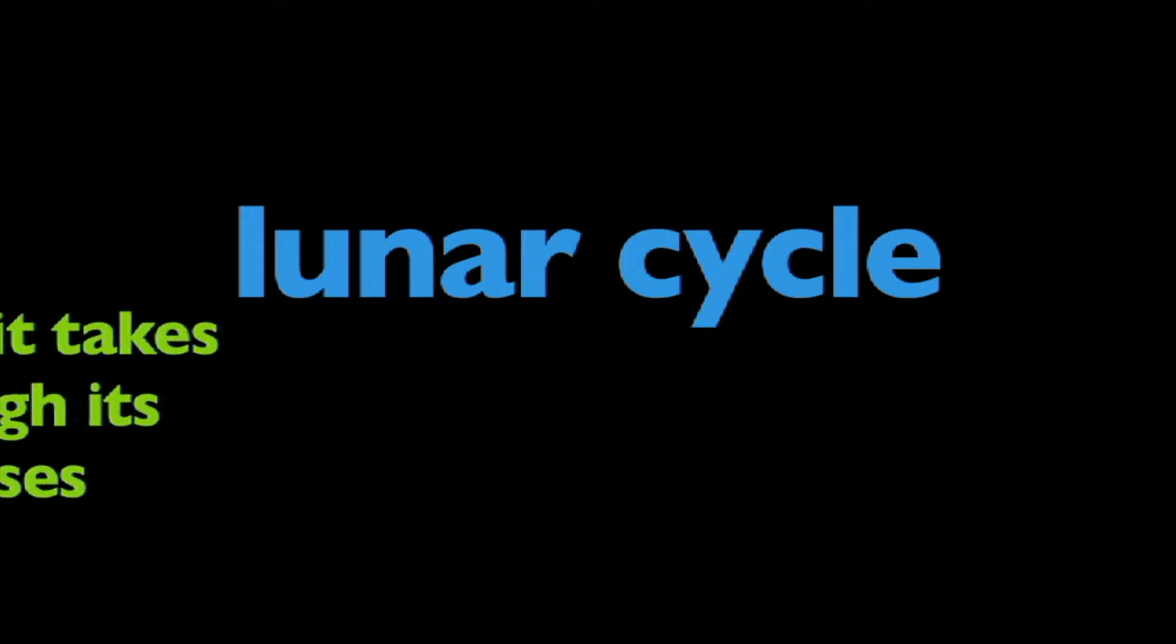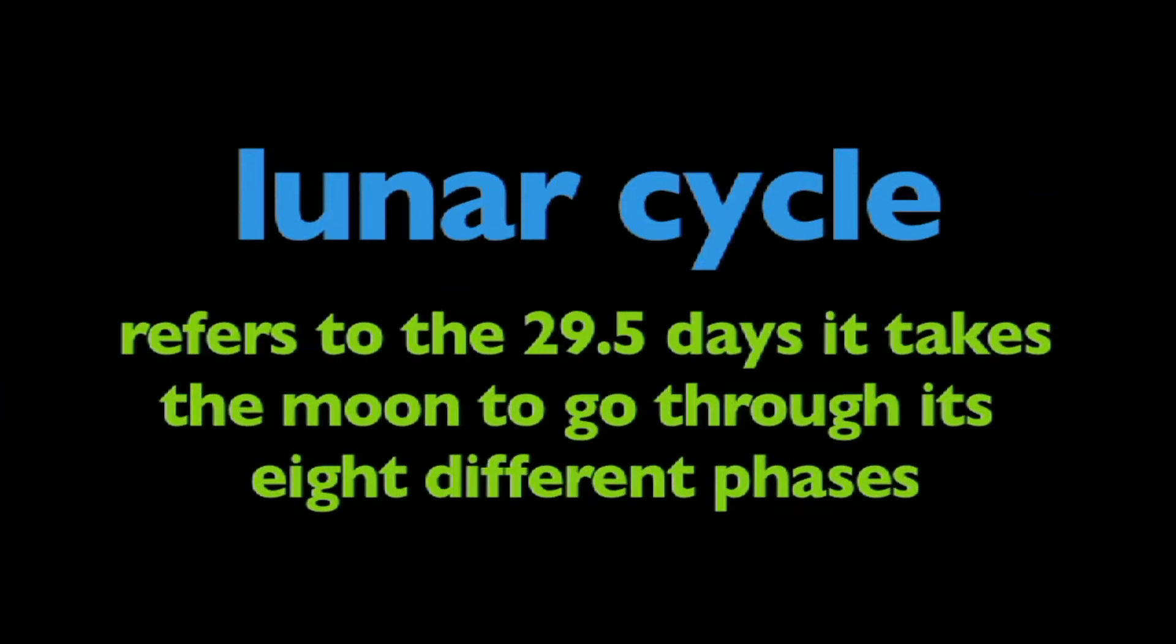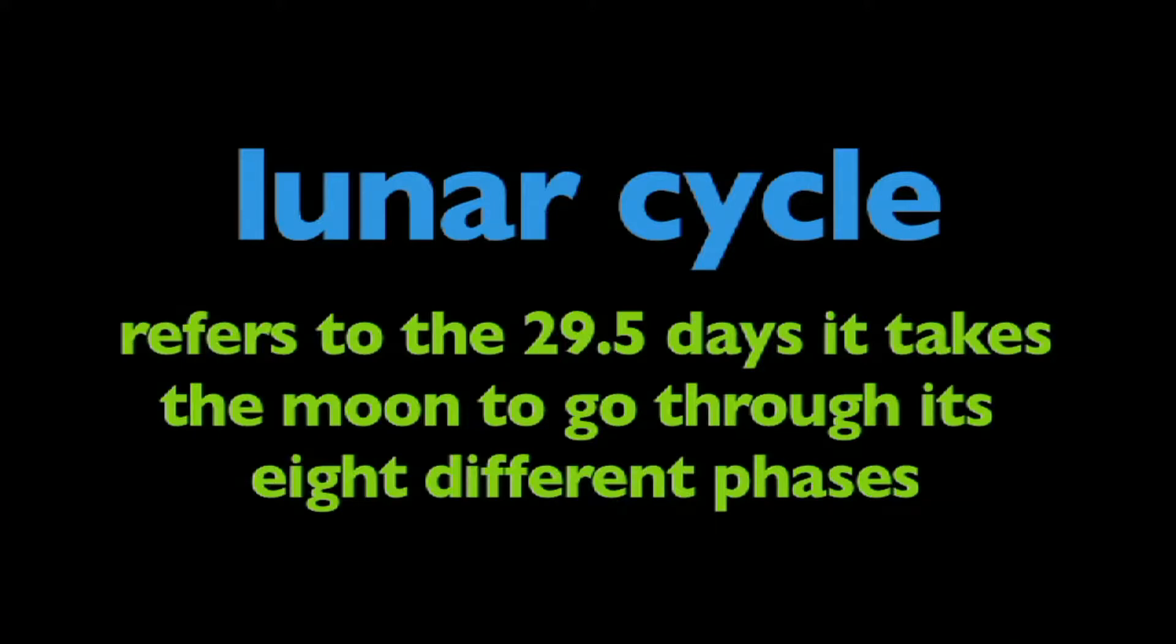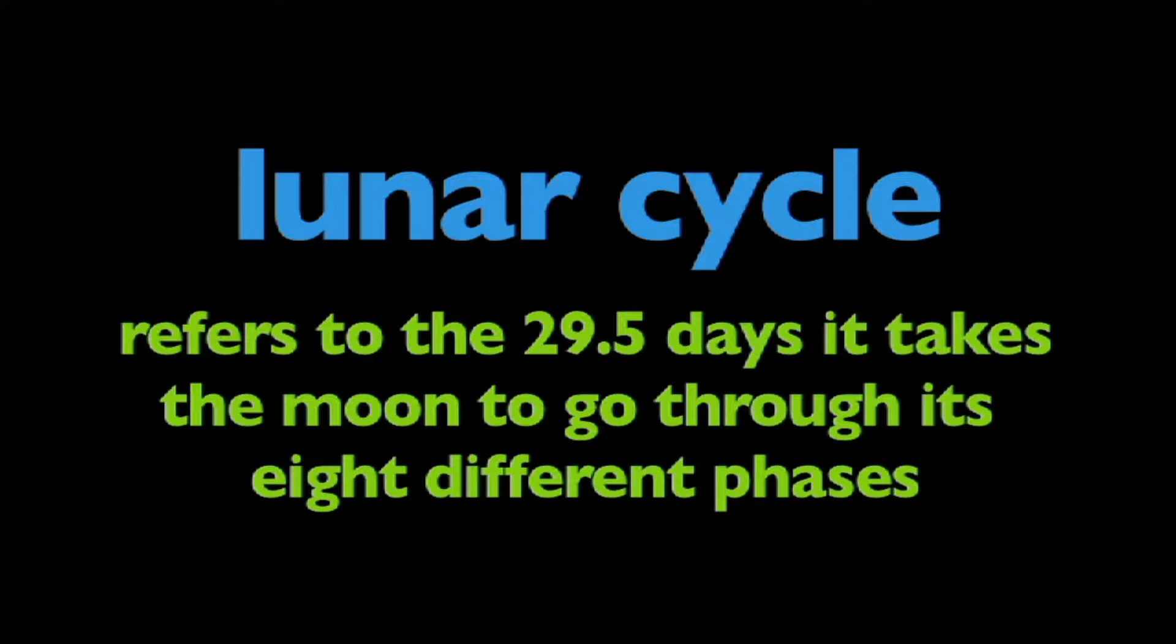In this program, we're going to learn about the lunar cycle. What is the lunar cycle? The lunar cycle refers to the 29.5 days it takes the moon to go through its eight different phases.